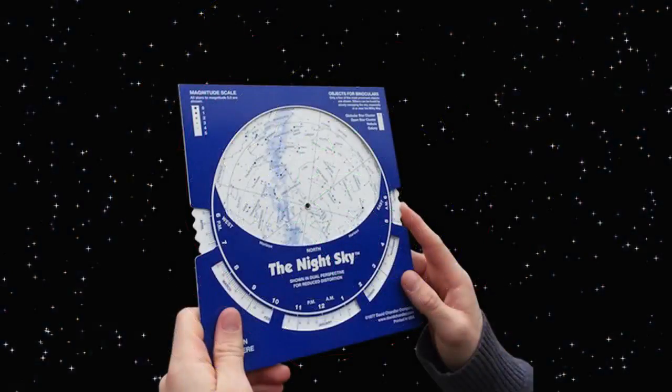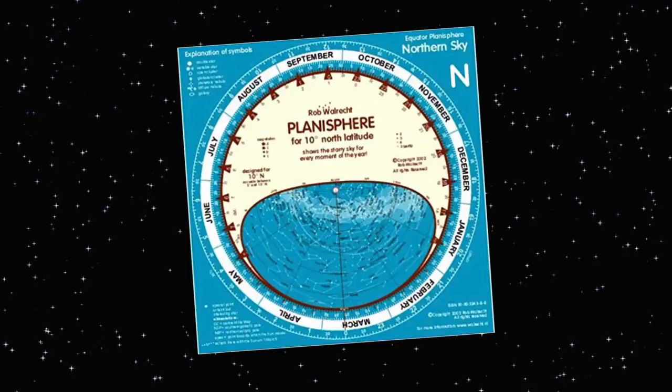If you go out and look for planispheres, as I've said, they're hard to find, especially around the equator. I managed to find one made by a manufacturer called Rob Walrecht, and I found it on Amazon that it claimed to be an equatorial planisphere. It's notable for a couple of reasons. One, they had really bad feedback for their delivery, and it doesn't seem to have been resolved.